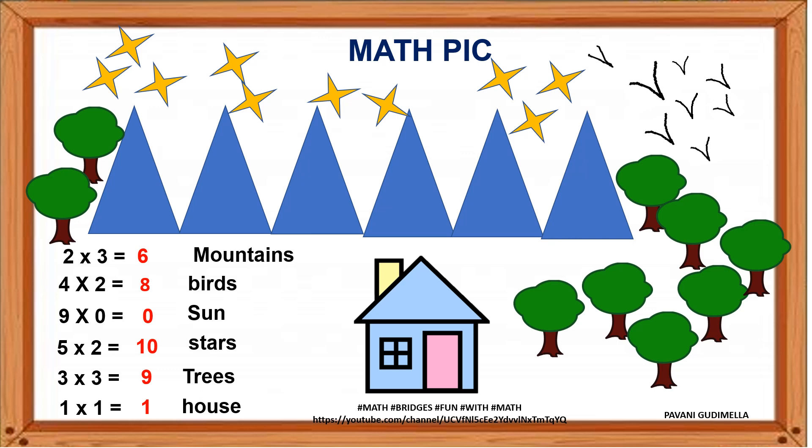Now give the answers. 2 threes are 6. 4 twos are 8. 9 zeros are 0 sun. If the child is drawing sun anywhere, it is wrong. 5 twos are 10 stars. 3 threes are 9 trees. And 1 one is 1 house. Let the children color the things, whatever instructions you have given. And you can ask them to check their answers and correct.